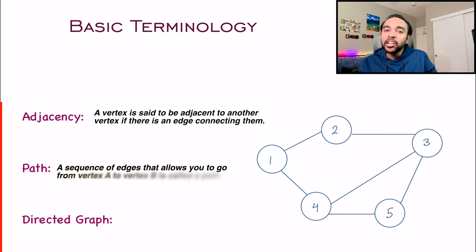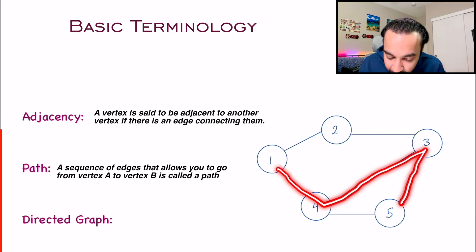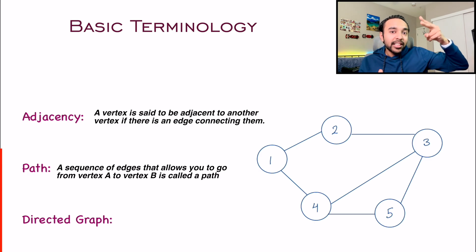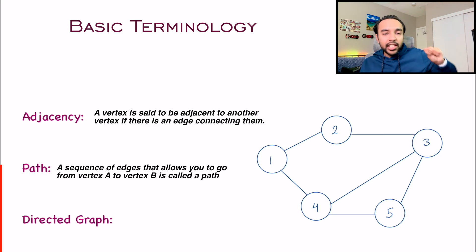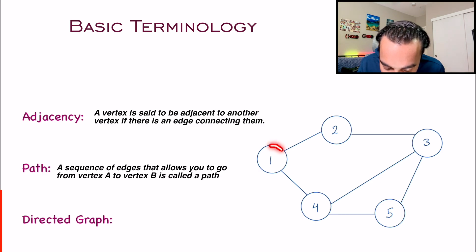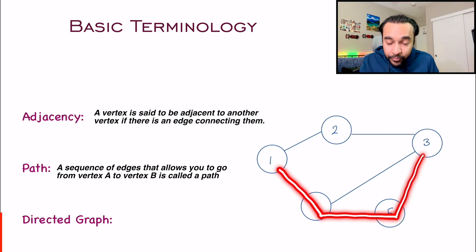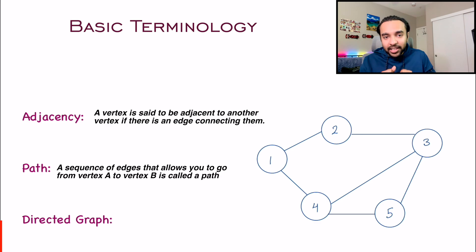The next term you will often hear is path. A path can be any path defined between two nodes in a graph. For example, a path can be 1, 4, 3, 5 — or it can be 1, 4, 5. So it can be any route as long as these nodes are connected. There are many problems where you need to find the shortest path. If you have to reach node one from node three, you could take a direct path or go through 5, then 4, then 1 — that would be a longer path.